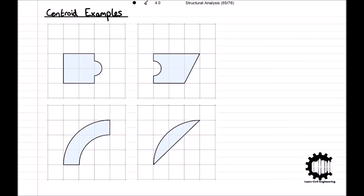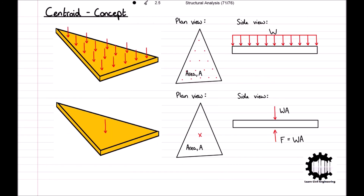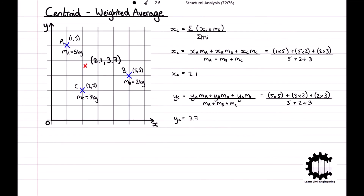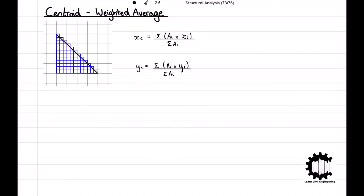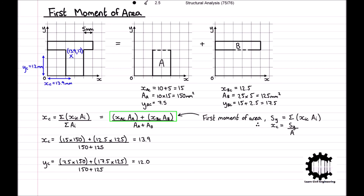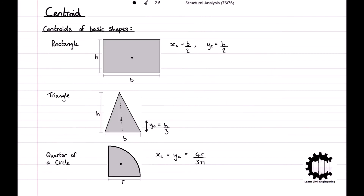In the next video we will be using the concept of the first moment of area to find the locations of centroids for further examples. To summarize this video: we introduced the concept of the centroid of a region and its significance; looked at a method for finding the centroid through trial and error; saw how to find the centroid of a system of particles using the weighted average of coordinates; saw how this method can be implemented for regions but is not efficient for hand calculations; and finished by introducing the first moment of area and how to use it to determine the centroid of a complex shape. If you found this video useful please leave a like and subscribe, and leave any questions in the comments below.